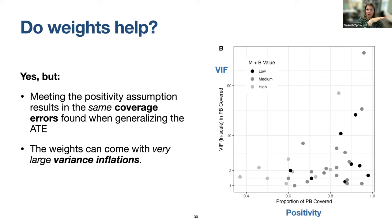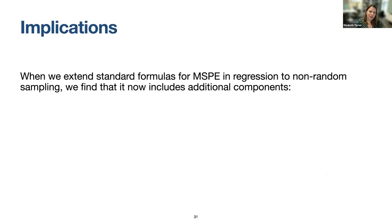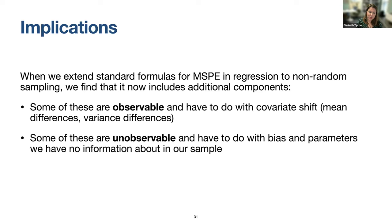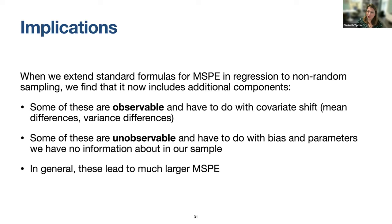The implications are that the standard regression formulas can be extended to non-random sampling, but they include additional components — some observable (like covariate shift) and some unobservable, like the residual treatment effect variation tau-squared. Is that residual variation the same in the sample as in Population B? I can assume so as a way of moving forward, but it's an assumption not based on data. In general this leads to larger mean squared prediction error when our sample is not randomly selected.